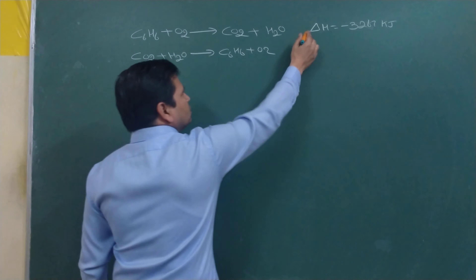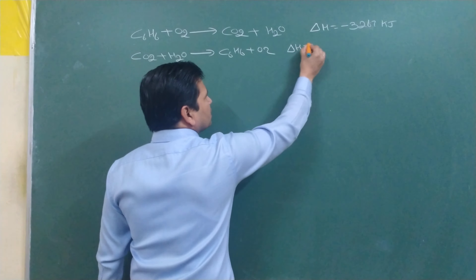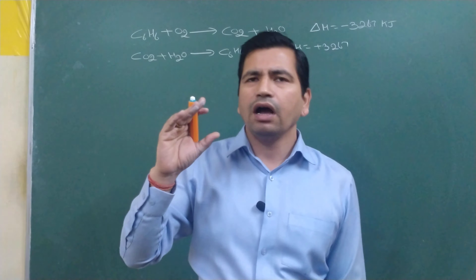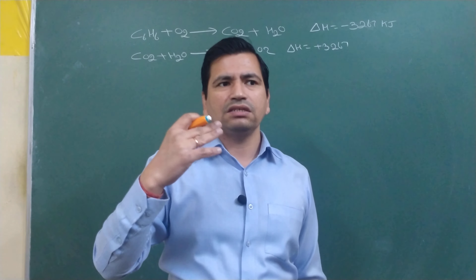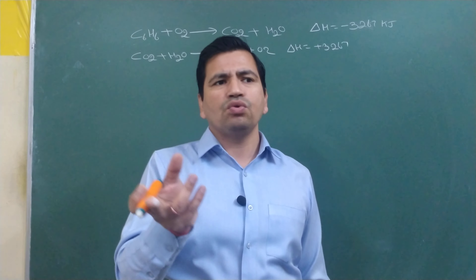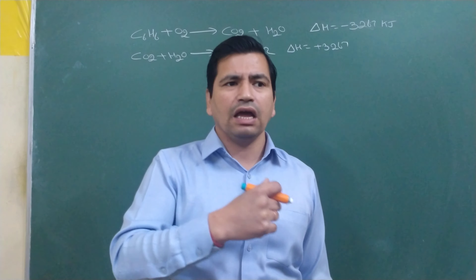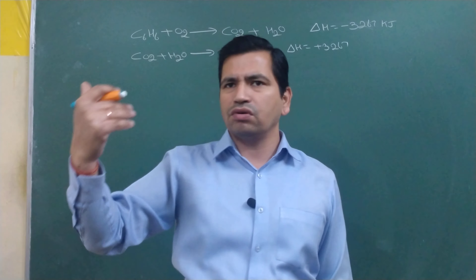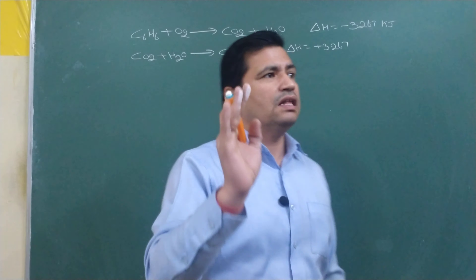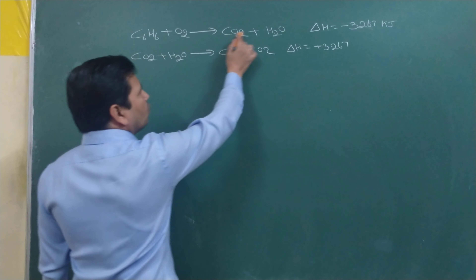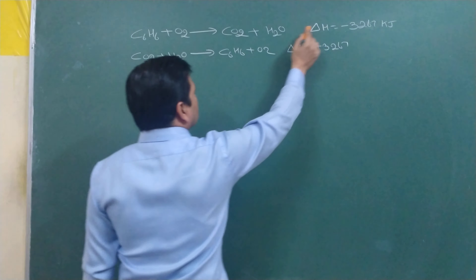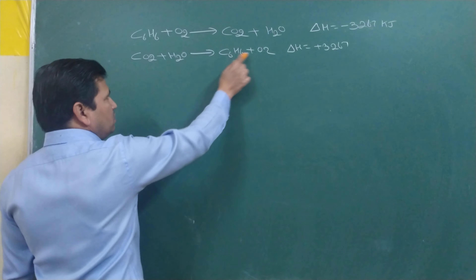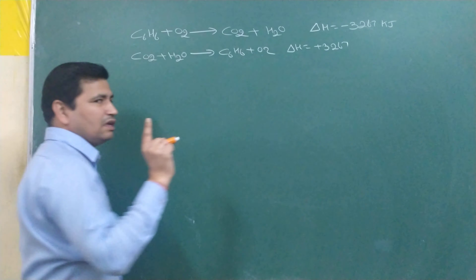This is like the example where H₂ plus O₂ → H₂O releases, say, 500 J. To break water back into H₂ and O₂ requires that same 500 J. So for the reverse reaction of benzene combustion, that much energy is required. Let's first balance the combustion reaction: C₆H₆ plus 15/2 O₂ → 6CO₂ plus 3H₂O.